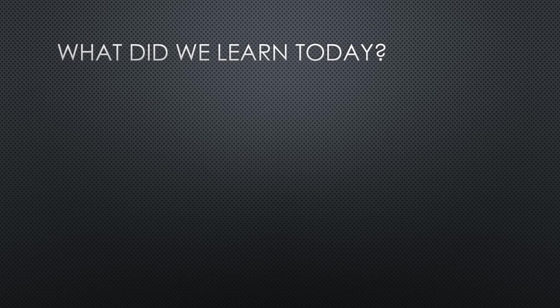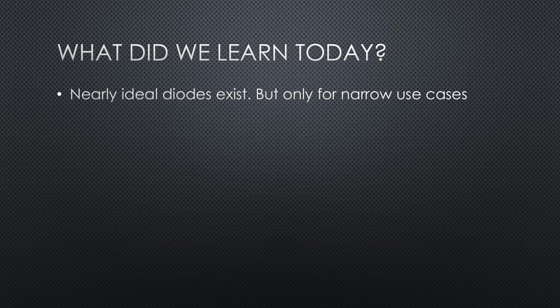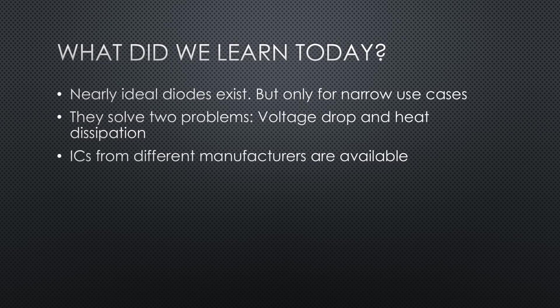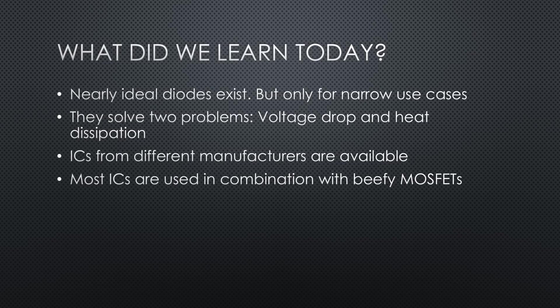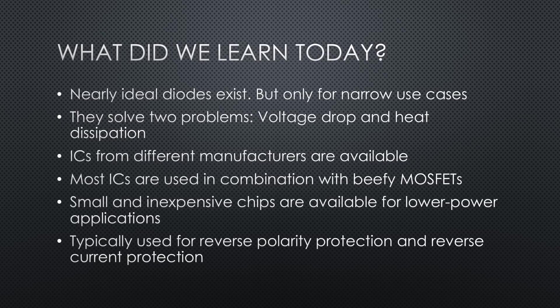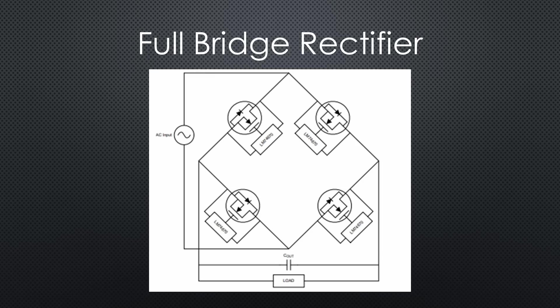What did we learn today? Nearly ideal diodes exist, but only for narrow use cases. They solve two problems of real diodes: voltage drop and heat dissipation. They are widely used and ICs from different manufacturers are available. Most ICs are used in combination with beefy MOSFETs, but for low power applications you get small and inexpensive chips. Typical use cases in your projects are reverse polarity protection and reverse current protection. You can even build full bridge rectifiers with them.